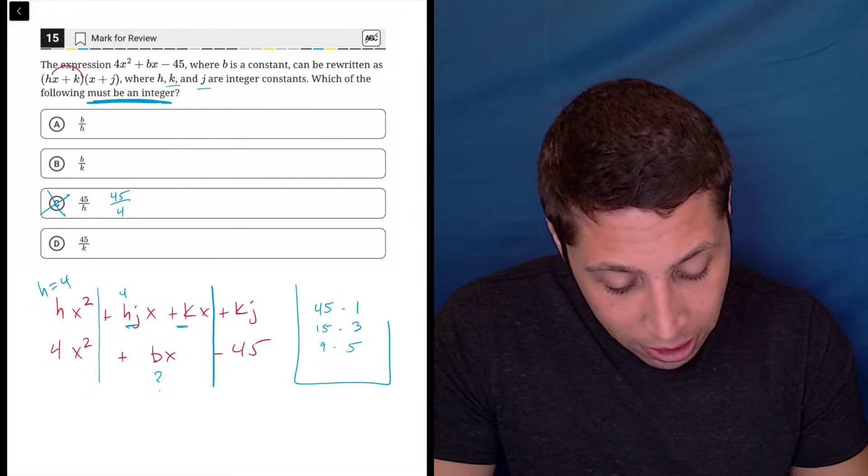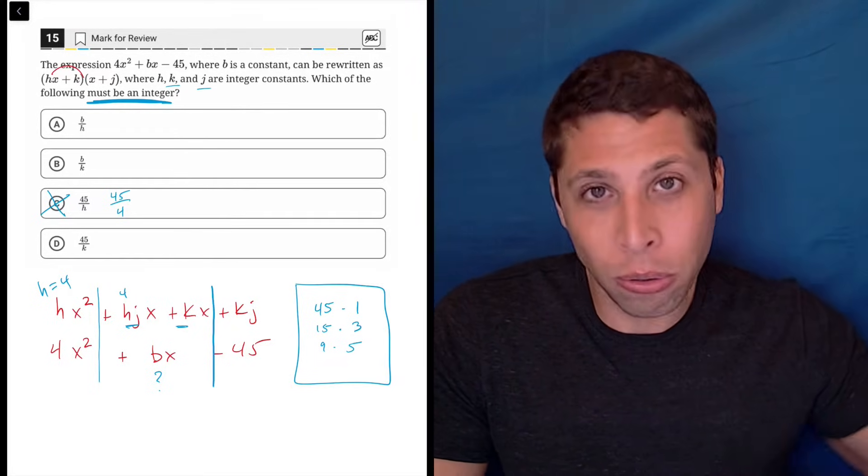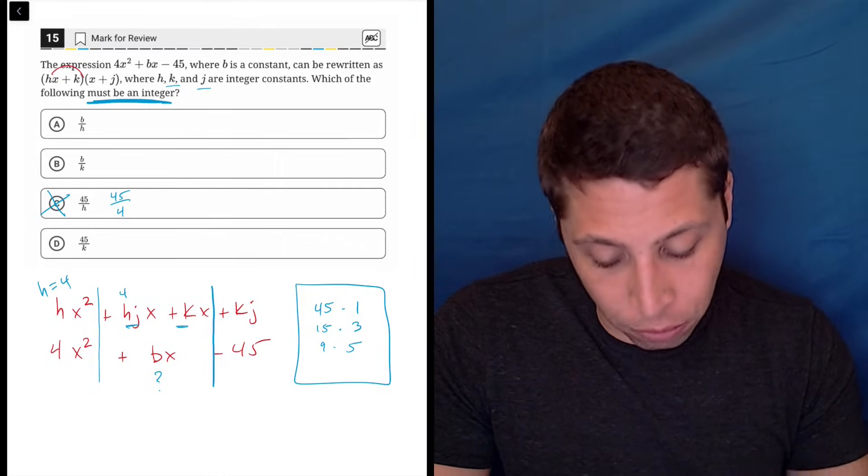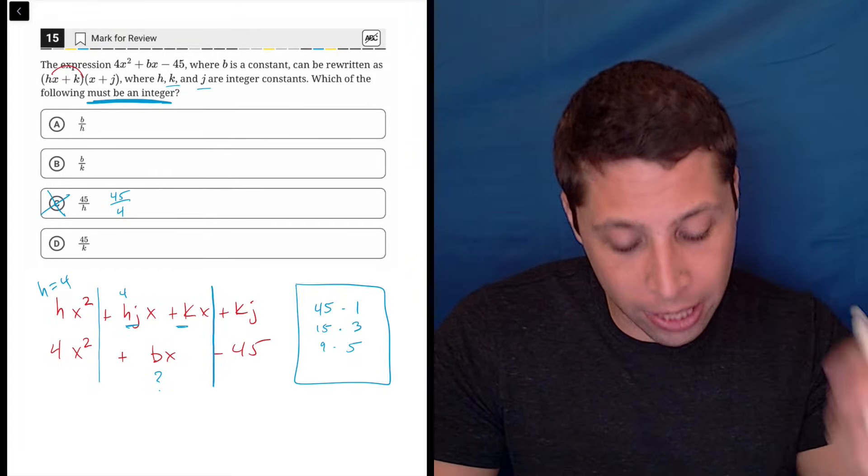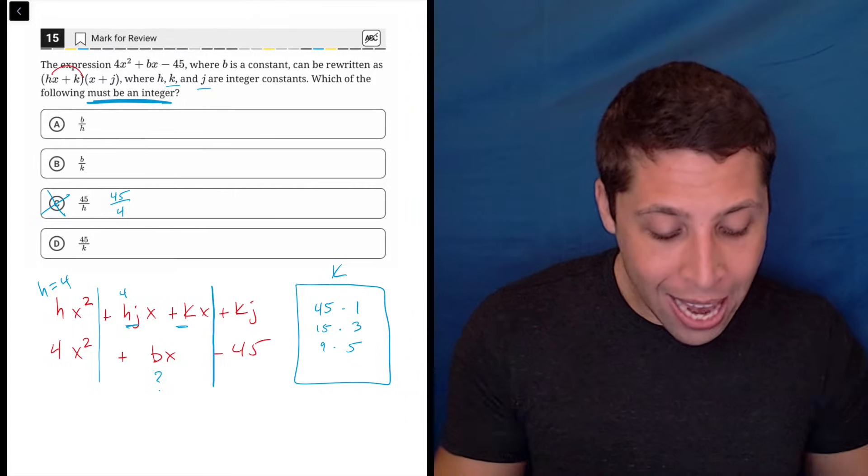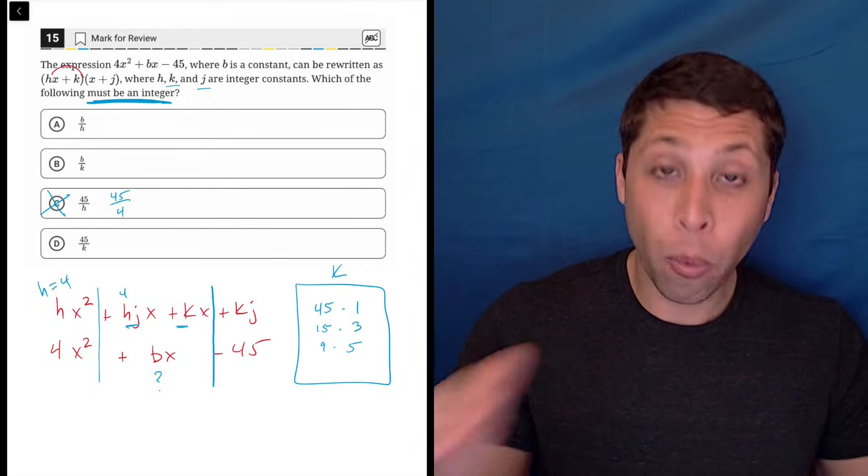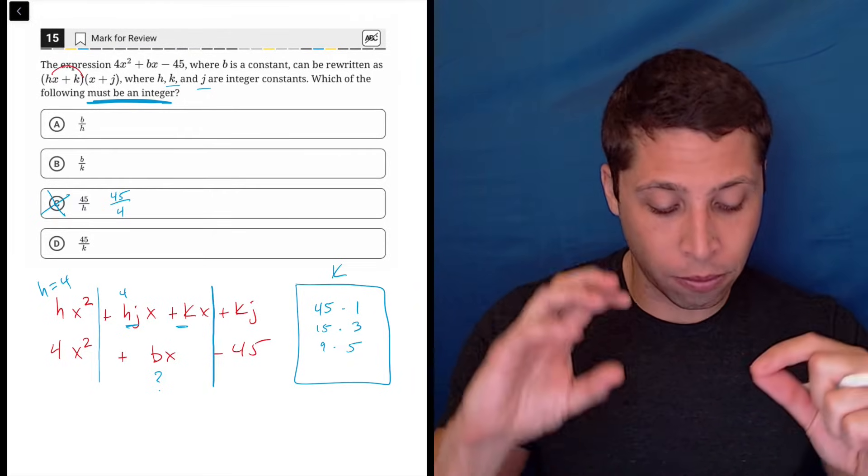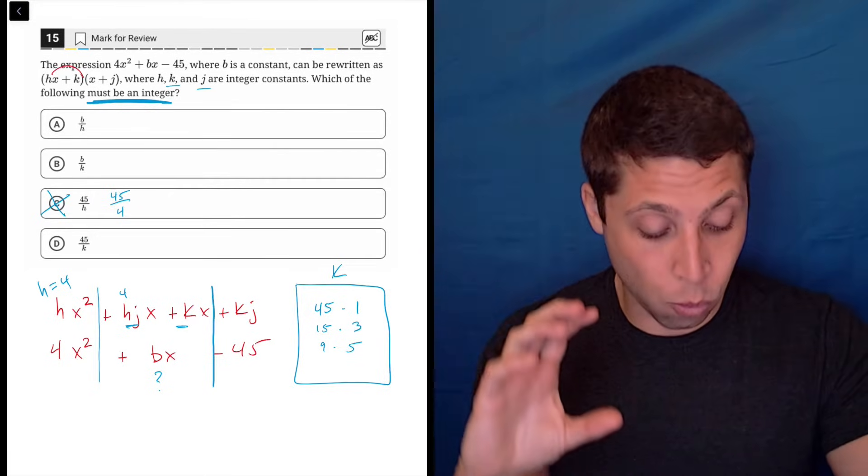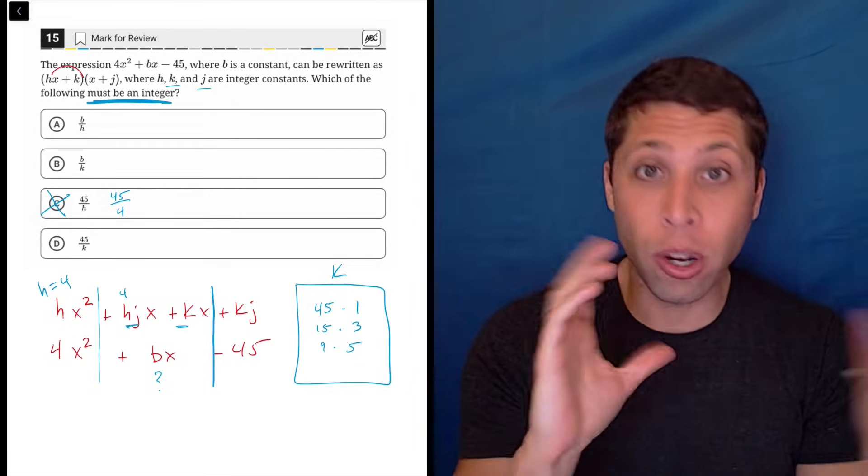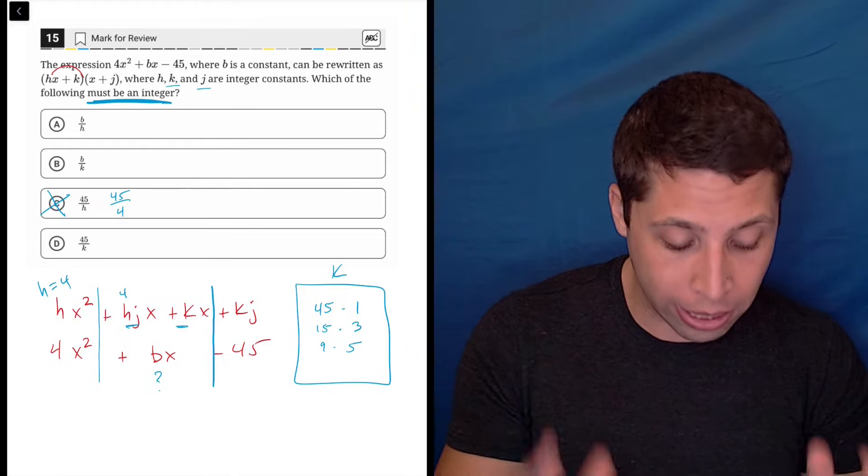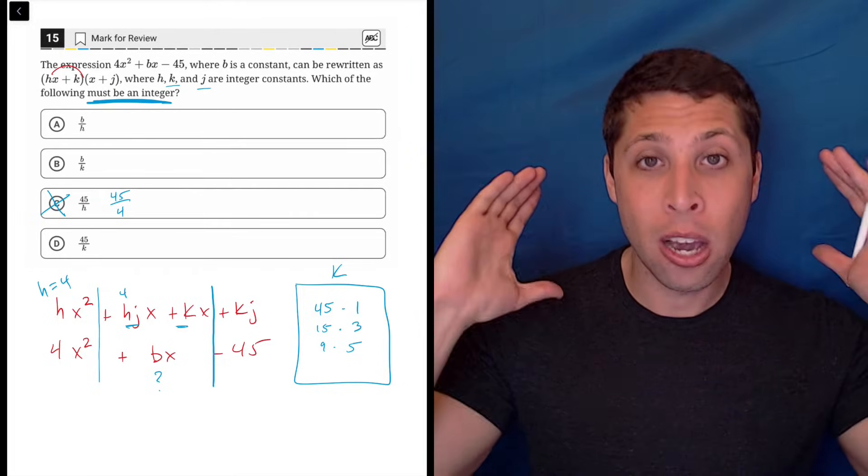Because of what I did over here, I actually do know that D is correct. So, 45 divided by k must be an integer because k could be any of those numbers. One of them could be j. It's either k and j could be either 45 and 1 or 1 and 45—we don't know which one's k, which one's j, but we know that k has to be one of those numbers.